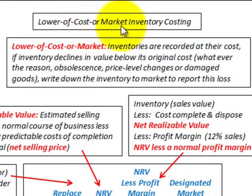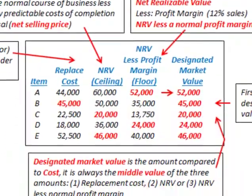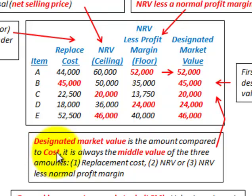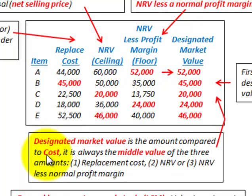We're going to be looking at lower cost or market for inventory costing. But before we get into that, I want to note a mistake I made. When you get to the area where it says the designated market value is compared to cost, I had mistakenly put replacement cost. This designated market value is compared to cost. So when you see replacement cost for this designated market value, replace it with cost.